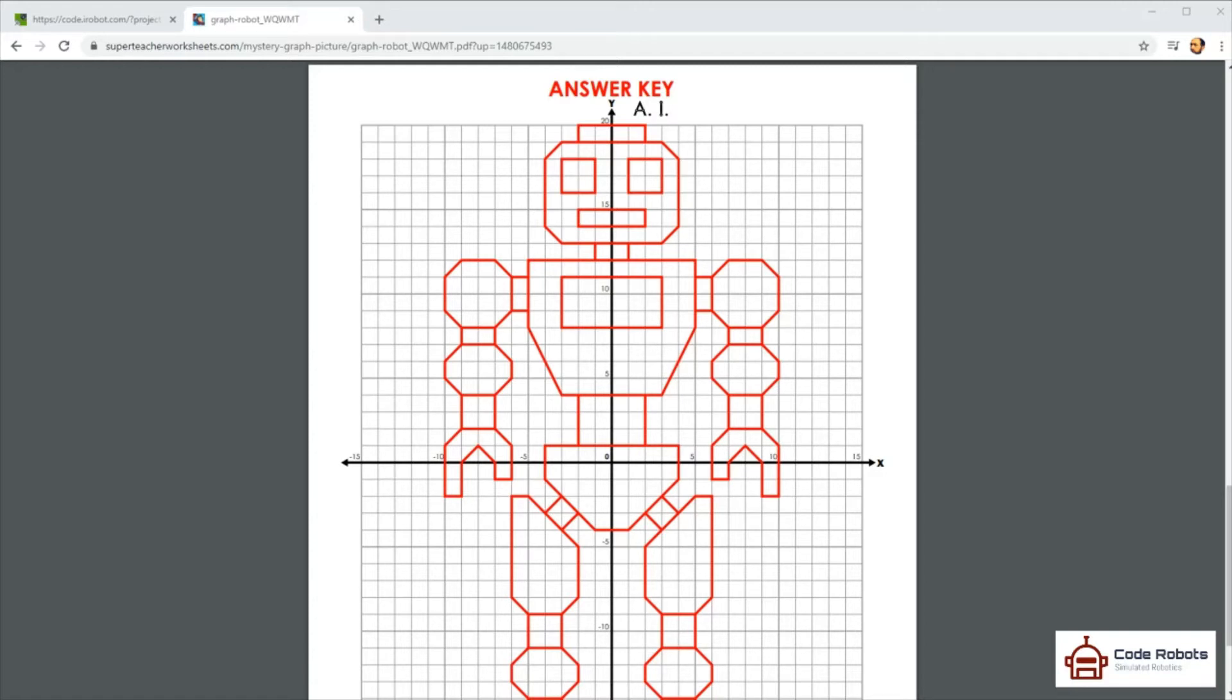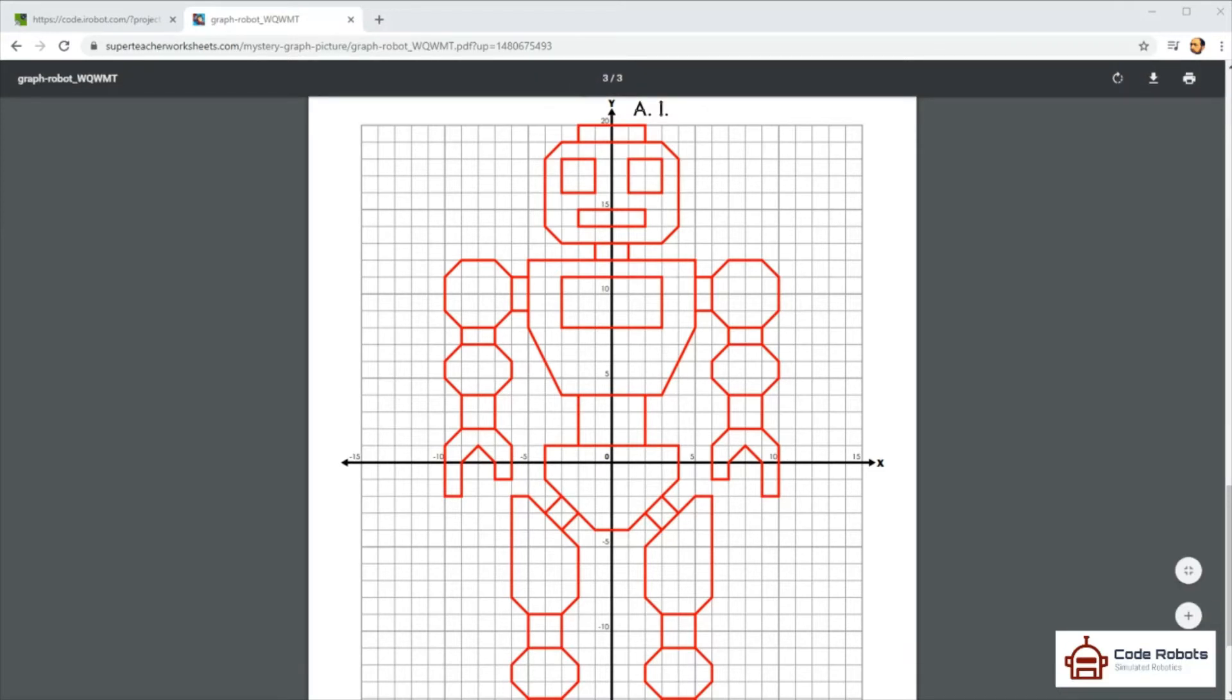So, for argument's sake, if we wanted to go to this point here, that would be x minus 3. There's 0 in the center, so it's minus 3, and we go up 4. So it's minus 3 and y is 4. That would be that point there.